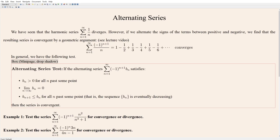So whereas the harmonic series diverges, the alternating harmonic series — notice it's still a harmonic series, but with an alternator on top so that the signs alternate between positive and negative — actually converges. And it's not terribly hard to see why. I have a geometric argument to show why this series is going to converge.